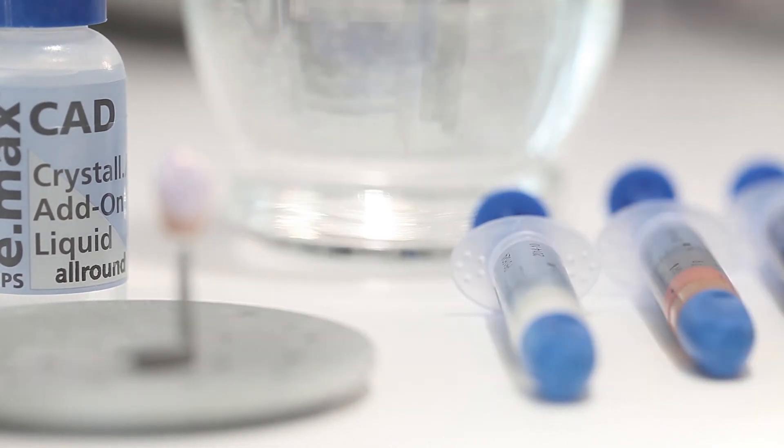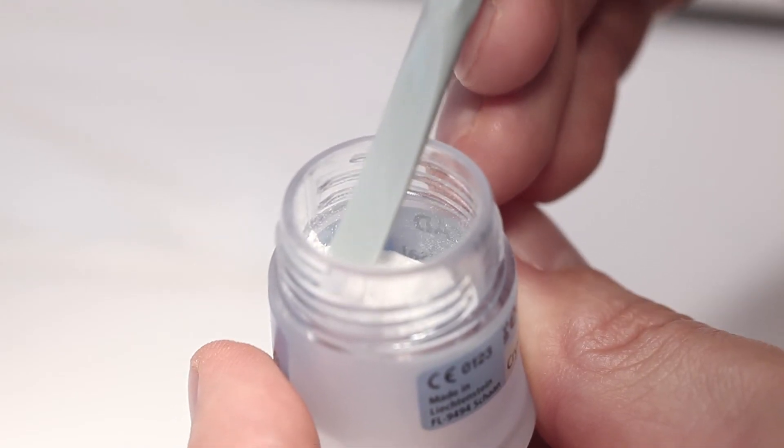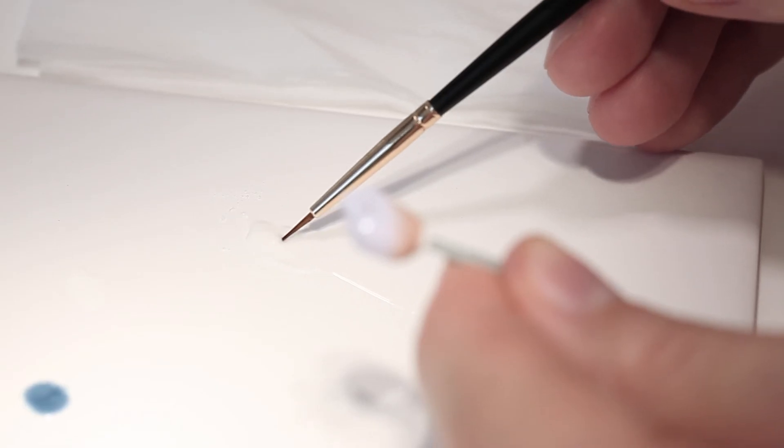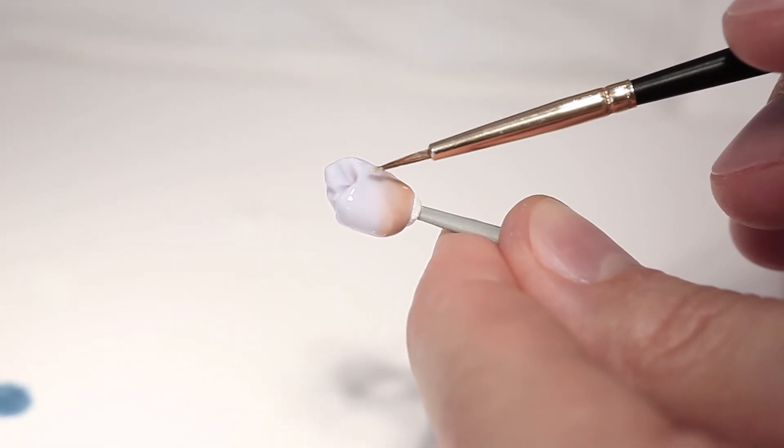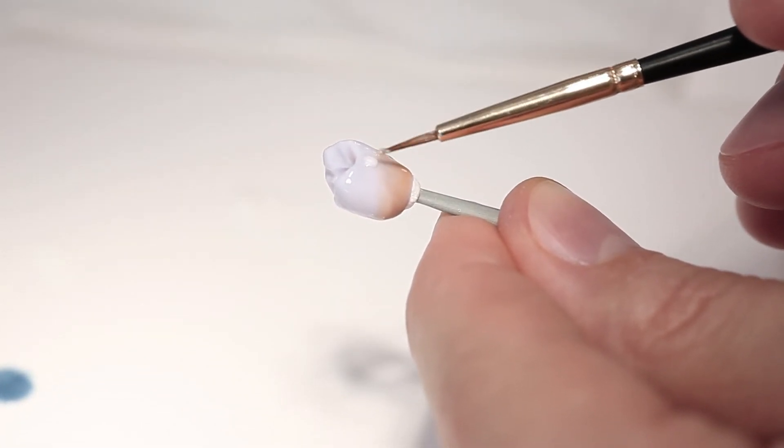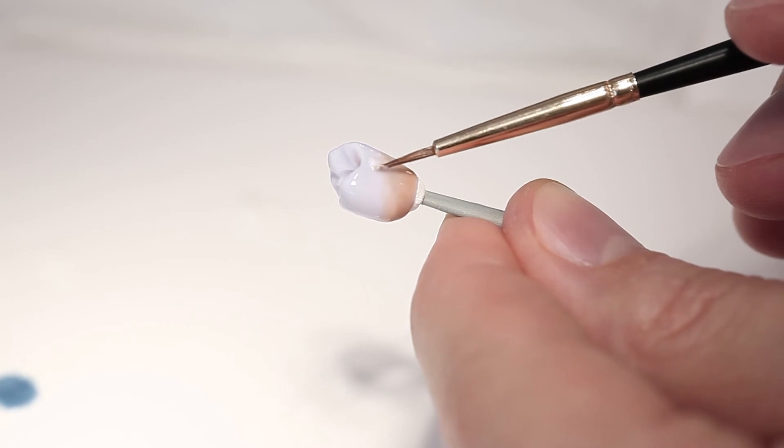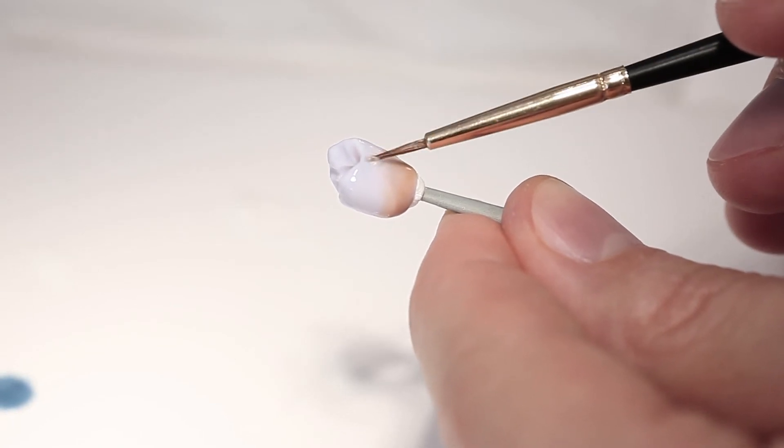If you would like to apply minor shape adjustments, for instance at the proximal contacts, use IPS eMAX CAD crystal add-on. Mix a small amount of IPS eMAX CAD crystal add-on powder with a small amount of IPS eMAX CAD crystal add-on liquid to achieve a consistency that is easy to contour. Apply the mixture directly to the areas in need of adjustment on top of the unfired glaze.